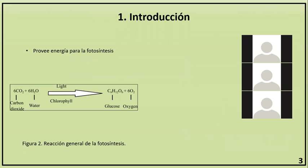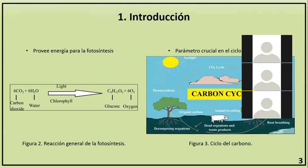La radiación PAR es un parámetro de vital importancia en diversos procesos biológicos y ecológicos, siendo el más importante de ellos la fotosíntesis, al aportar la energía necesaria para que se lleven a cabo las reacciones químicas del proceso. También juega un papel importante en el ciclo de energía de la superficie terrestre y en el ciclo de carbono de los ecosistemas terrestres.